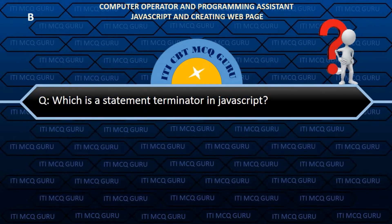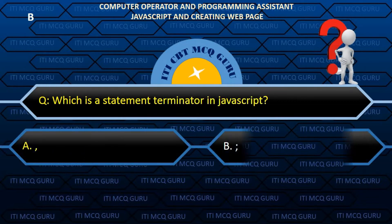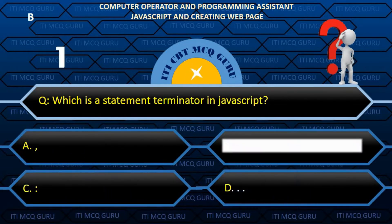Which is a statement terminator in JavaScript? B. Semicolon.